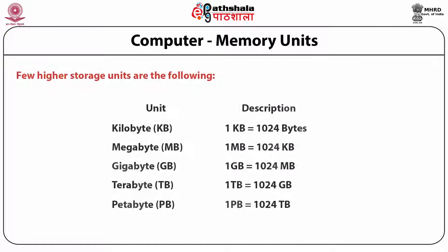We will see the memory units. We store information in terms of bits and bytes. A one or zero is called a bit — that is binary digit. One kilobyte is 1024 bytes, denoted as KB. One MB or megabyte is 1024 kilobytes. One GB or gigabyte is about 1024 MB. Then comes terabyte — one terabyte is 1024 gigabytes. Then petabyte — one petabyte is about 1024 terabytes. That is how information is stored.